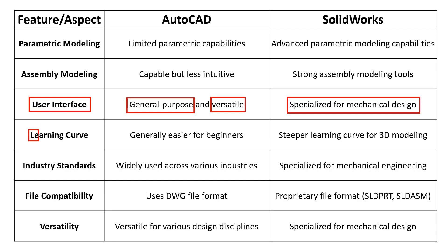Learning Curve: AutoCAD is generally considered easier for beginners to learn, especially for 2D drafting. Its user interface is straightforward and it is widely used in various industries. SOLIDWORKS has a steeper learning curve, especially for users new to 3D parametric modeling. However, once mastered, SOLIDWORKS provides powerful tools for efficient mechanical design.